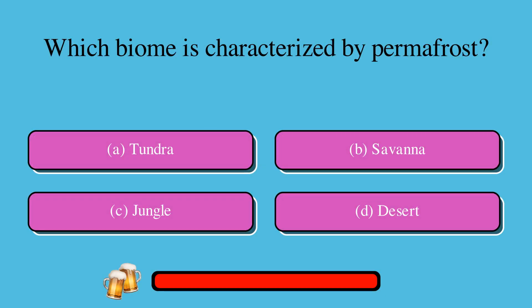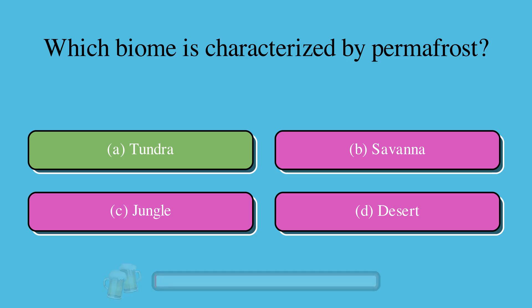Which biome is characterized by permafrost? A. Tundra, B. Savannah, C. Jungle, or D. Desert? The correct answer is A. Tundra.